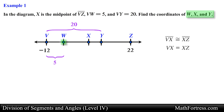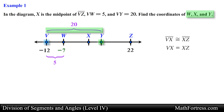For point W, we know that its coordinate is going to be 5 units to the right of point V, which has a coordinate of negative 12. Moving 5 units to the right from negative 12, we land on negative 7. Similarly, the coordinate of point Y is going to be 20 units to the right of point V, giving point Y a coordinate of 8.